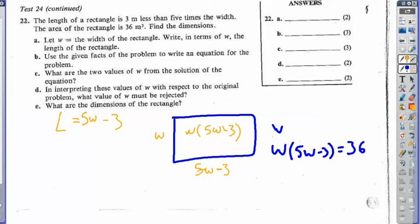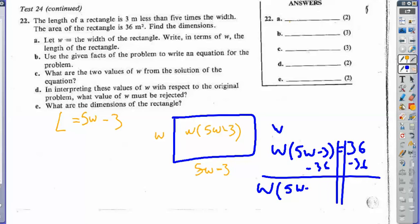So to solve a quadratic, it has to be in factored form and equal to zero. Right now, this is not in factored form, or it's not equal to zero, so let's make it equal to zero. So subtract 36, and I get w times (5w minus 3) minus 36. That's equal to zero.